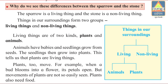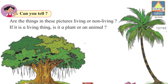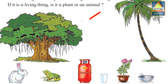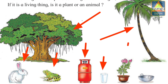Are the things in this picture living or non-living? If it is a living thing, is it a plant or an animal? Some pictures are shown: trees, rabbit, frog, gas, cub, plant, and tree. So we have to divide them into living things and non-living things, as well as plants and animals.